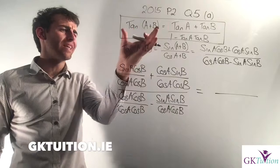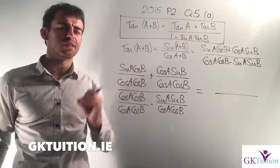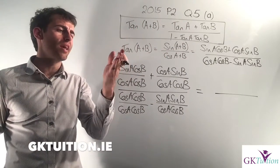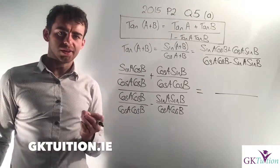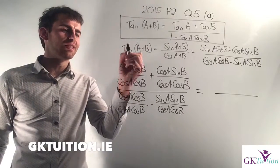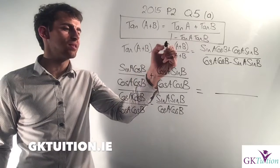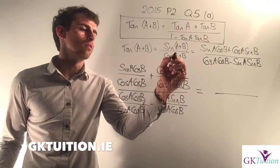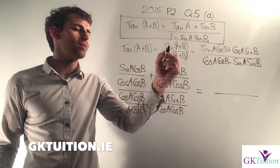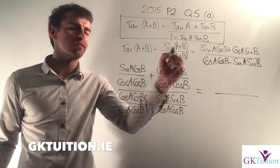In this case we're going to take the left hand side and turn it into the right hand side. So we take tan(A+B). In page 13 in your log tables, it says that the tan of an angle is the same as the sine of that angle over cos of that angle. So tan(A+B) is the same as sin(A+B) over cos(A+B).